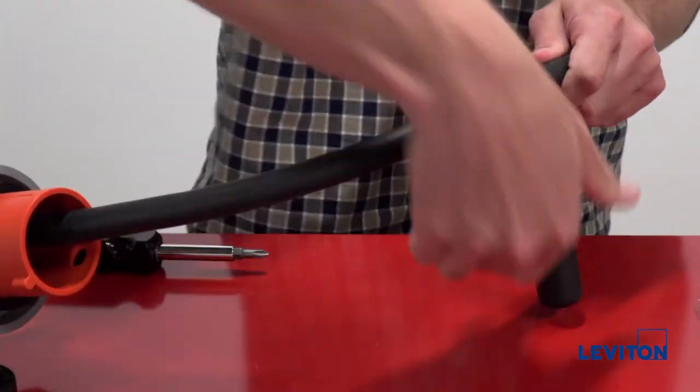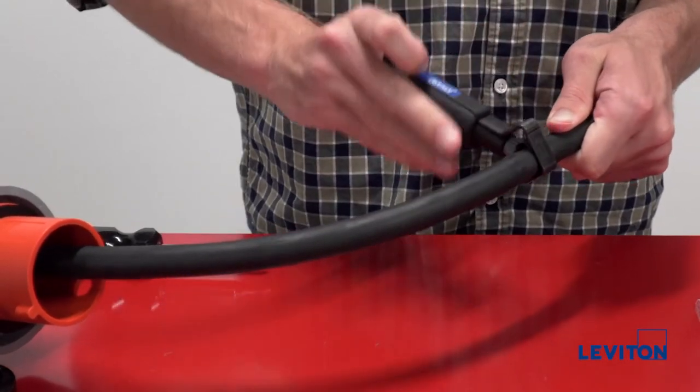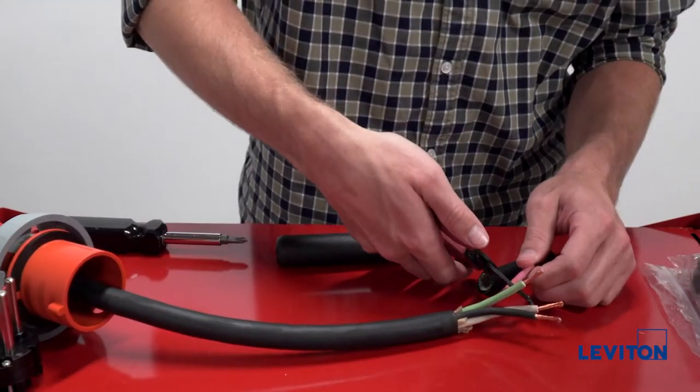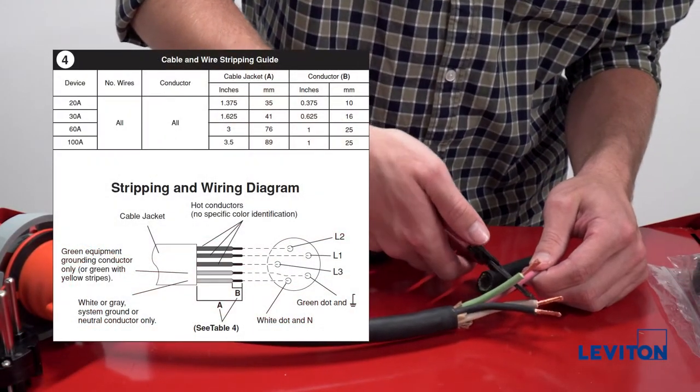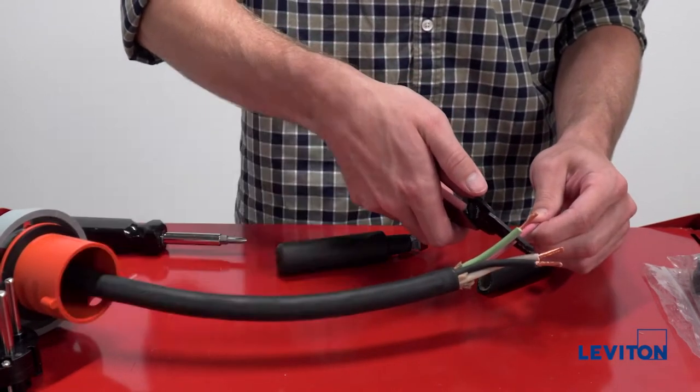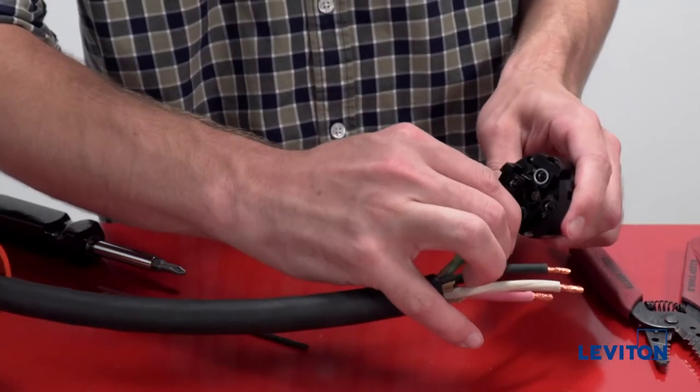Now you are ready to wire the contact carrier. Using your tools, cut and strip the cable jacket and wire conductors according to table 4 in the installation instructions. Connect the wires to the appropriate terminals.